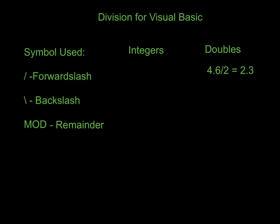However, with integers, we do have to worry about things like rounding and remaining numbers, because we're going to use all the numbers in different ways throughout our programs. Which is why it's very important to understand how this works. The first thing we're going to work with is the forward slash, which is what you're very used to seeing with division problems. If we use the forward slash when dividing integers, which Visual Basic tends to frown upon as far as the true definition of how integers work, it will round your answer. For example, if I do 7 divided by 3, it's going to give me the answer of 2.